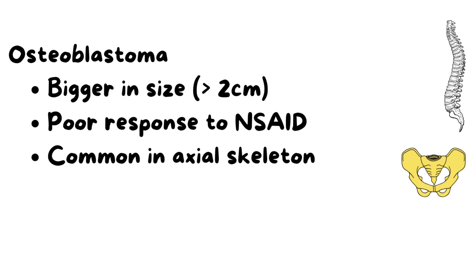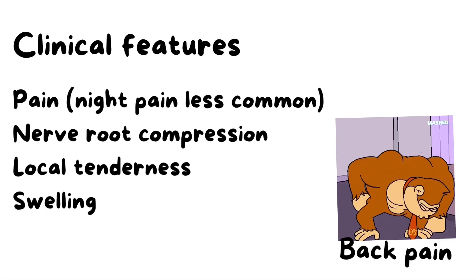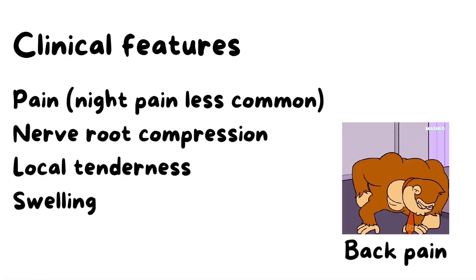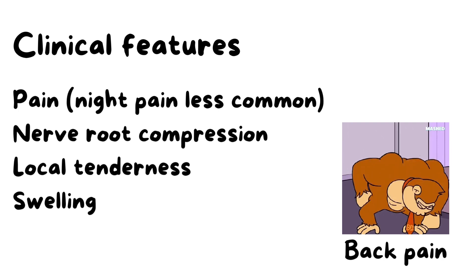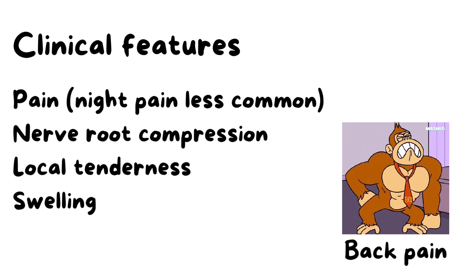Osteoblastoma is common in the axial skeleton like the vertebral body and pelvis, whereas osteoid osteoma is common in the appendicular skeleton. A characteristic clinical feature of osteoid osteoma is night pain — the patient has significant pain during the night that disturbs their sleep — whereas night pain is not commonly seen in osteoblastoma.